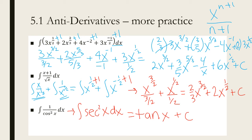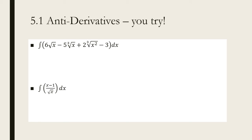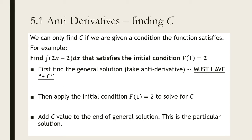I'm going to skip the next problem since we basically covered everything on the previous slide. This is what we want to get to today: finding the C. So far we have been finding the general solution with the plus C. Now we're going to find a particular solution that actually has a number instead of C, but the only way we can do that is if we are given an initial condition.